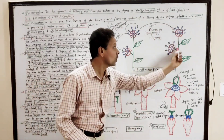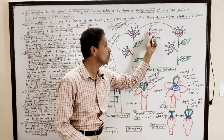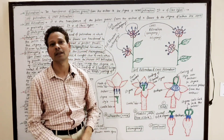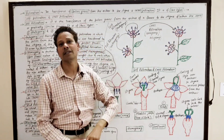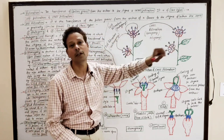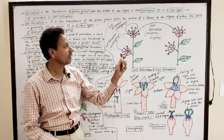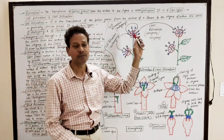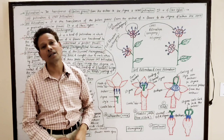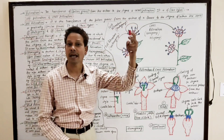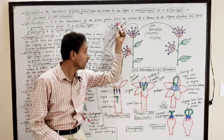In cross-pollination, also named xenogamy or allogamy, the transference of pollens occurs from the mature anther to the stigma, and this occurs between different flowers of different plants having different genetic material.